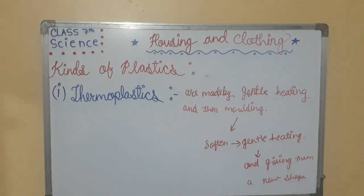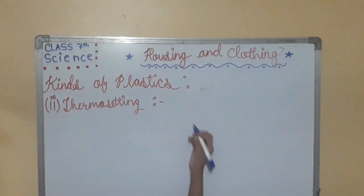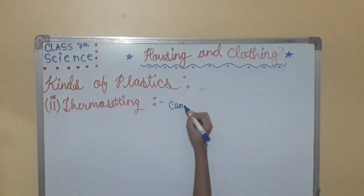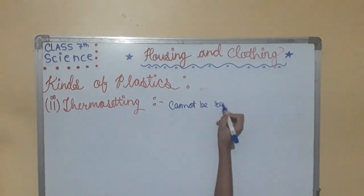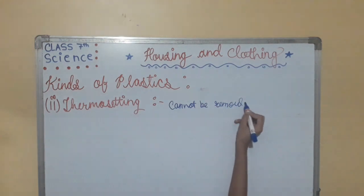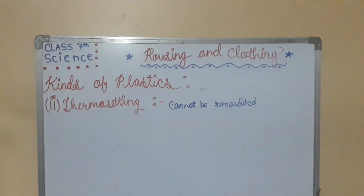The next kind of plastic is thermosetting plastics. Thermosetting plastics cannot be remolded like thermoplastics. When a thermosetting plastic is molded by gentle heating, the molding is permanent.